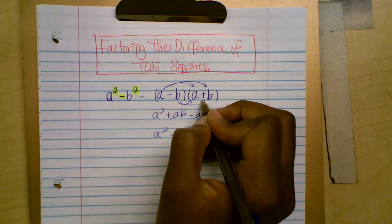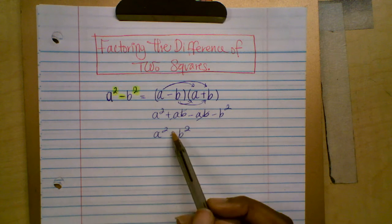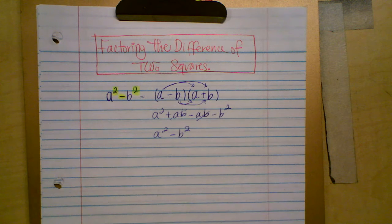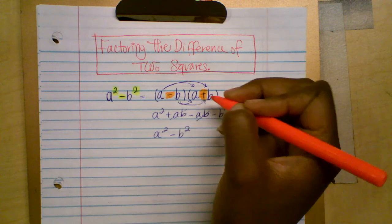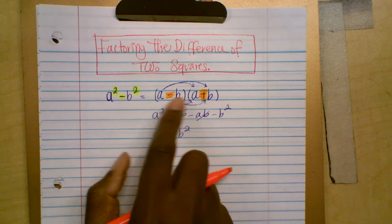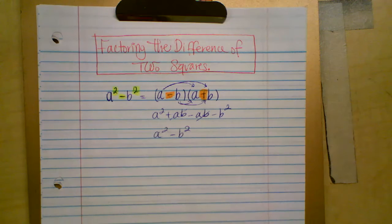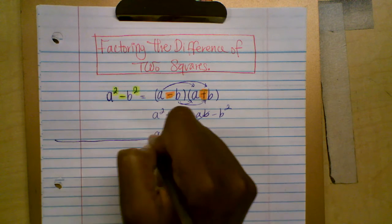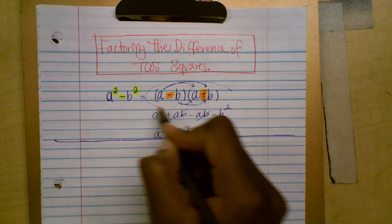To factor the difference of two squares: draw two empty factors. Make sure that in one factor they have opposite signs — one is negative and one is positive. Drop the exponent when you write them, because A times A is A squared, but if you do X squared times X squared you end up with A to the fourth power. Use this formula for the difference of two squares.